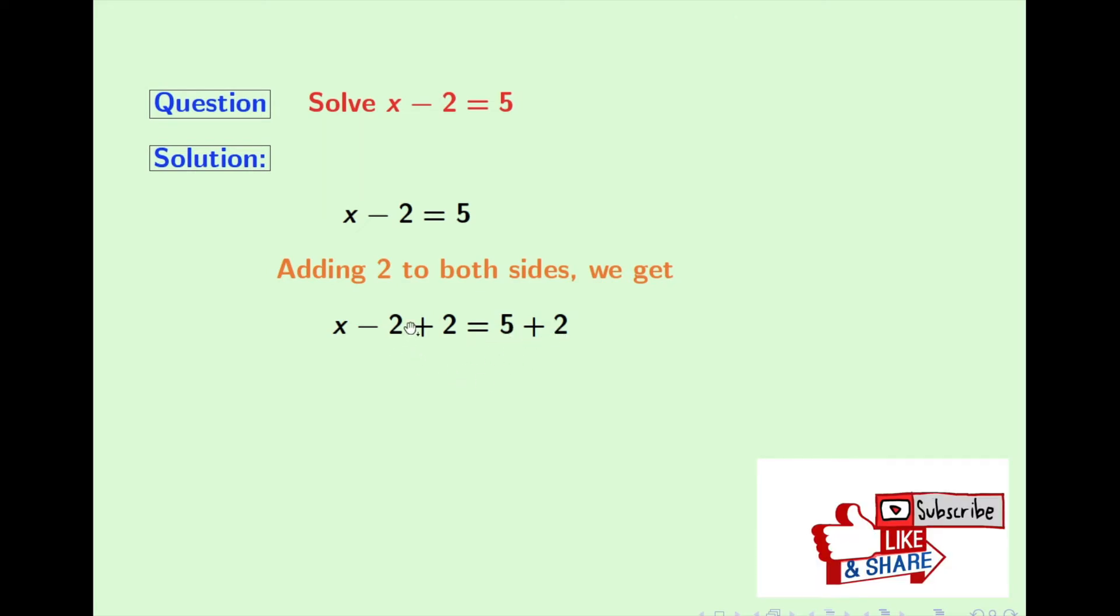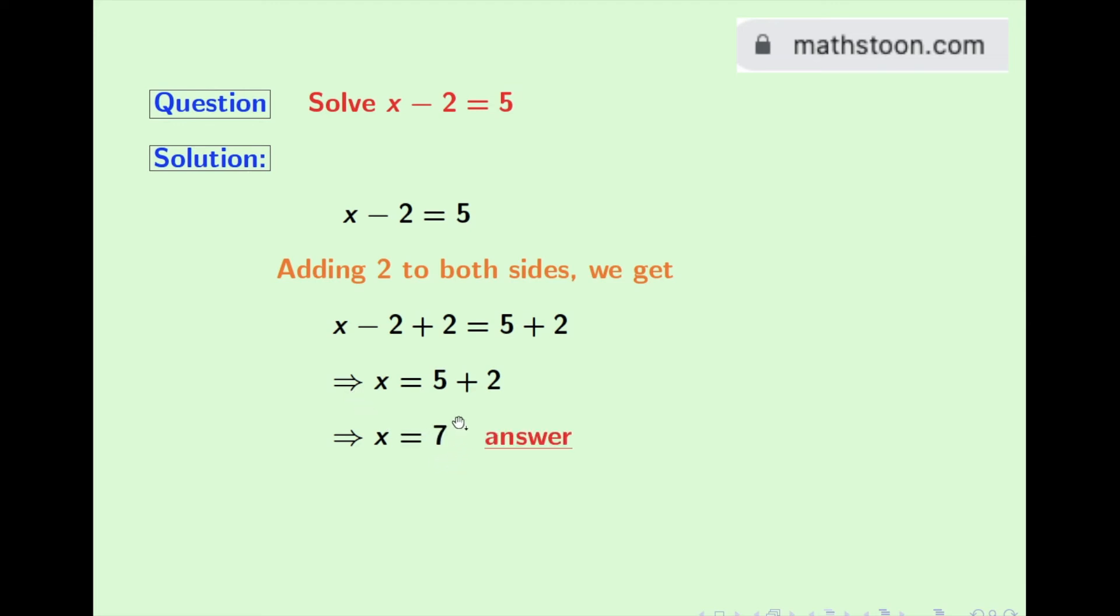See that after simplification, we have only x in the left hand side and in the right hand side, we have 5 plus 2. So finally, we get x is equal to 7 and this comes out as our final answer.